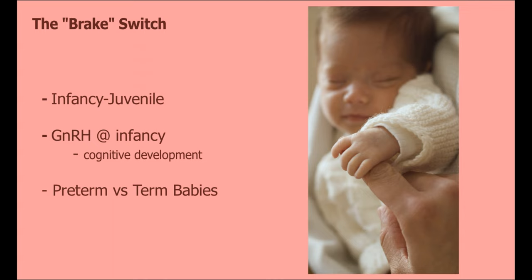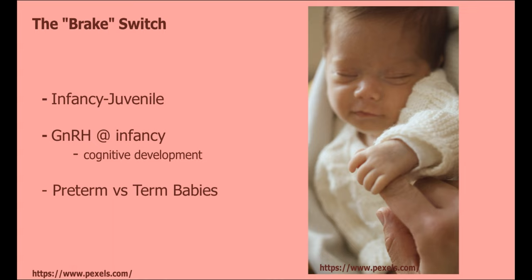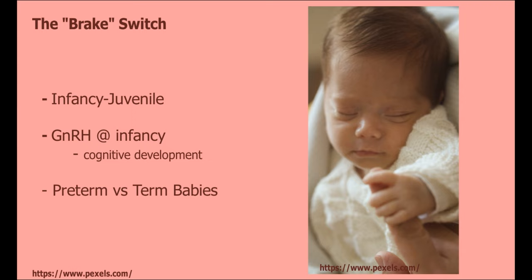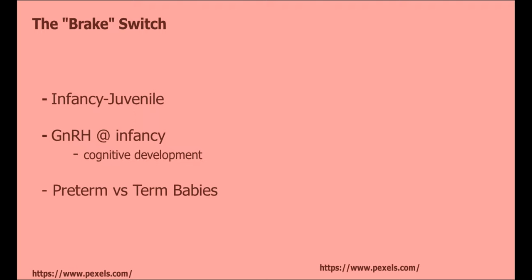GnRH pulse generation during infancy is akin to pubertal and adult levels. What differs is that GnRH activity in infancy is determined more by cognitive development rather than sexual development, since ovulation or spermatogenesis is not initiated at such a young age. This is supported by monitoring preterm babies, who had higher GnRH levels than term babies, likely to compensate for elevated demands for cognitive development. Therefore, once cognitive development achieves an acceptable level of maturation, the need for GnRH pulsatility diminishes, and the infancy-to-juvenile transition can begin with a brake switch.